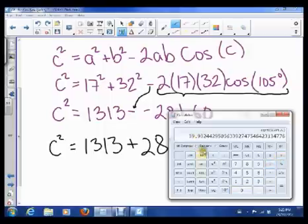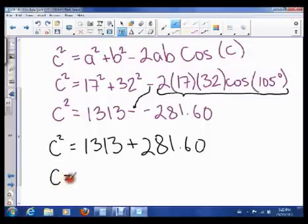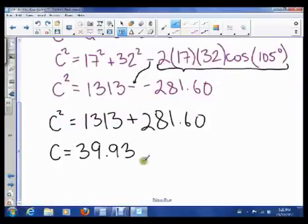So the answer is 39.93. So c is equal to 39.93. Where the units in the question, centimeters, so this is centimeters.